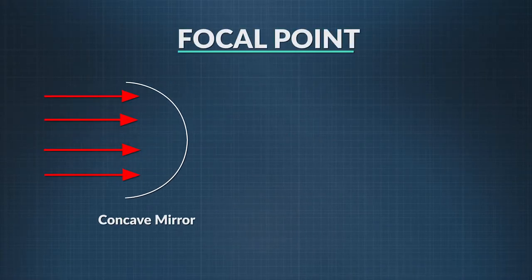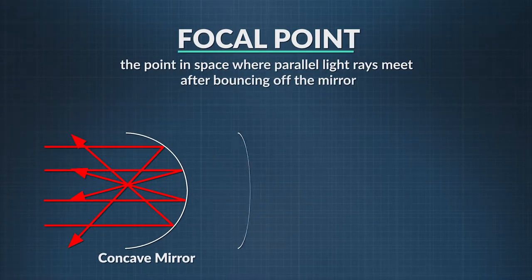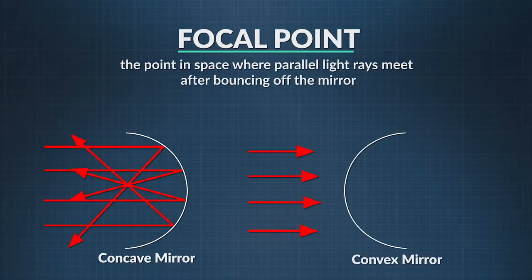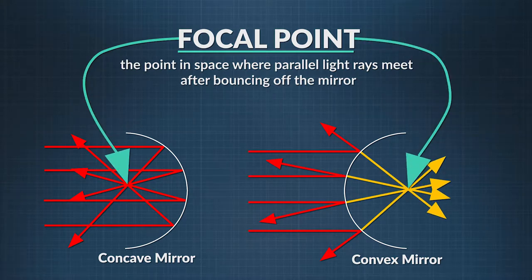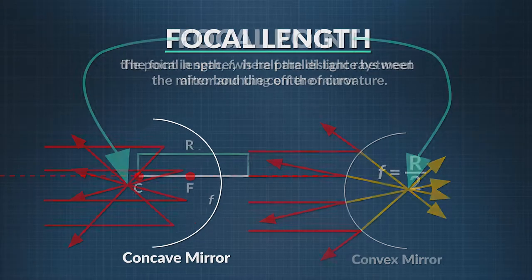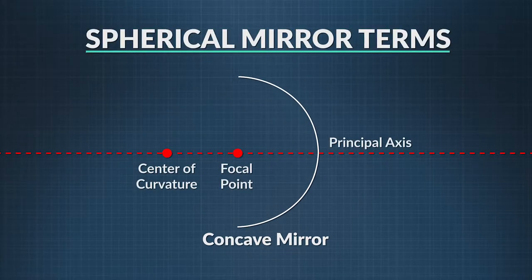The focal point of a spherical mirror is the point in space where parallel light rays meet after bouncing off the mirror. It's equal to half the distance of the center of curvature from the surface of the mirror. So those are the three key terms: the center of curvature, the principal axis, and the focal point.